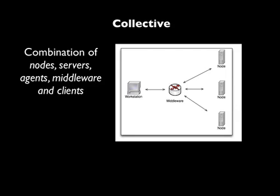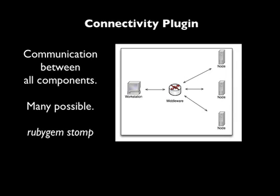We're using the middleware, and if you combine all of these things together you get a collective — nodes, servers, agents, middleware, clients, and some other plugins, all combined into a collective. The one thing I didn't mention is how we're actually communicating with the middleware — it's a plugin. So you might have ones for RabbitMQ, ones for ActiveMQ, maybe one for a commercial queuing system. At the moment the one that's most supported is Stomp. You would basically install the Ruby gem Stomp on any machine, on all your clients, anywhere you need to communicate with the middleware.